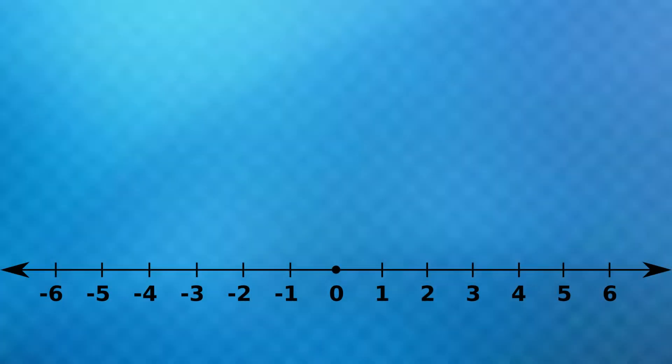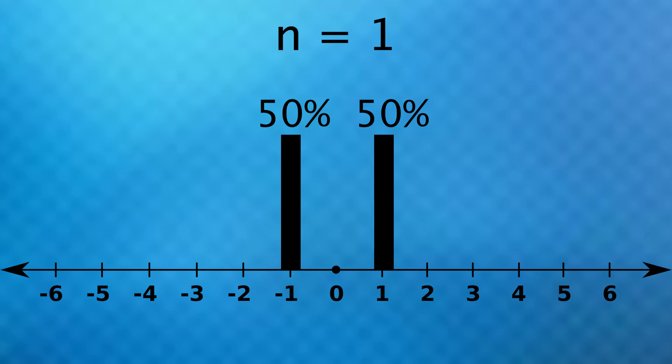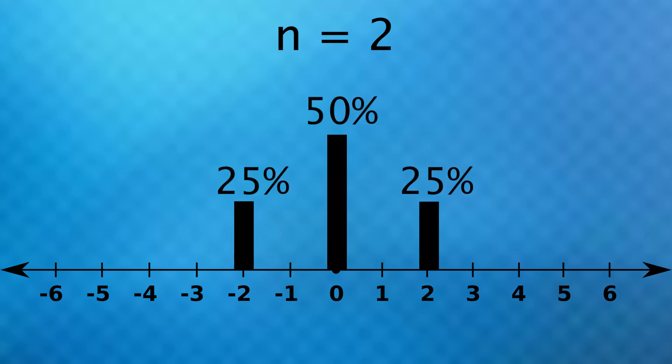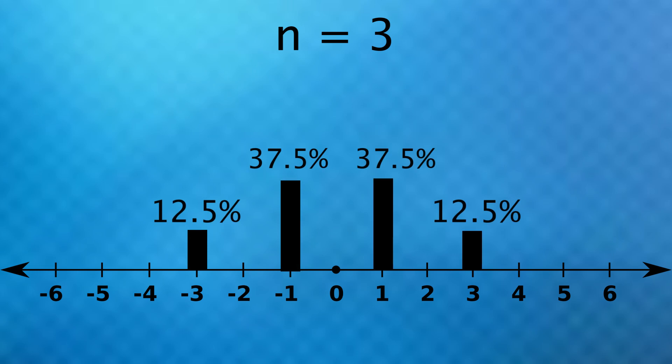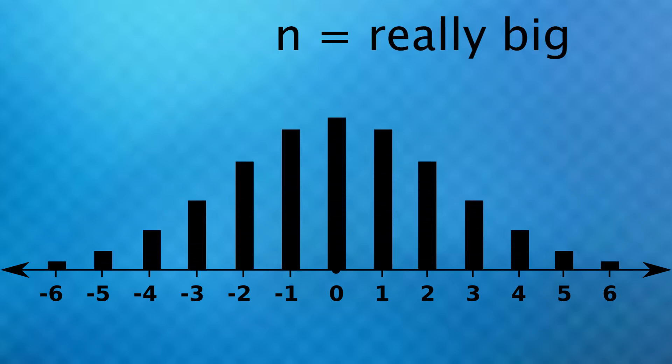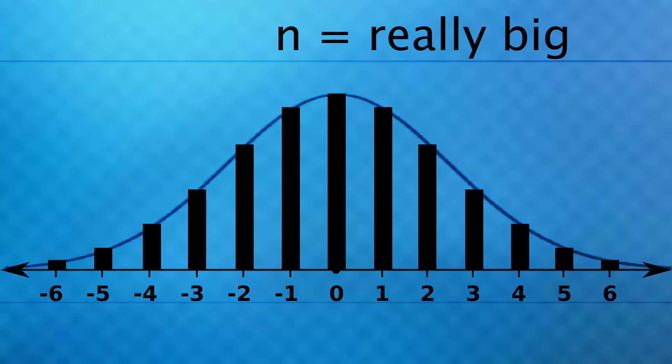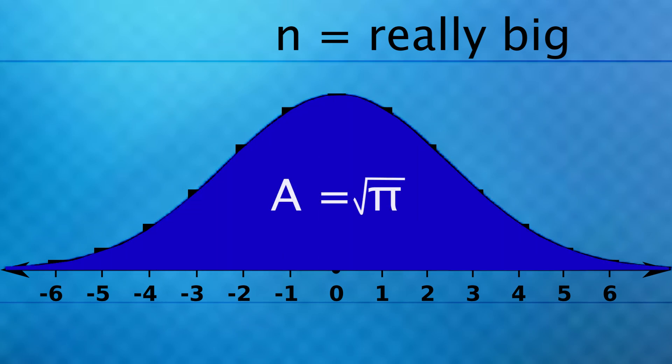For a random walk, after 1 flip, you have a 50% chance of being at plus 1 and a 50% chance of being at minus 1. After 2 flips, you have a 50% chance of being at the origin and a 25% chance of being at plus or minus 2. And I'll do one more where after 3 flips, it's a 12.5% chance of landing at 3 or negative 3 and a 37.5% chance of plus or minus 1. But after you take more and more steps, the distribution approaches a bell curve. We saw before how when this curve is not normalized, the area under it is the square root of pi. And as we just saw, that average distance equation also includes the square root of pi.